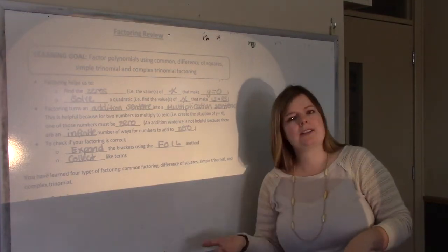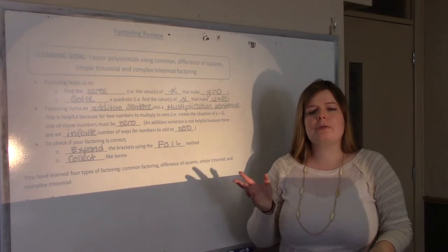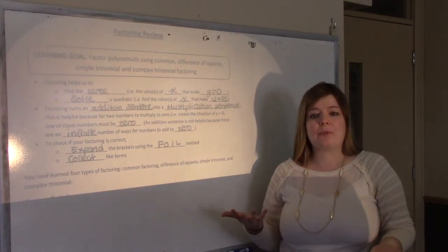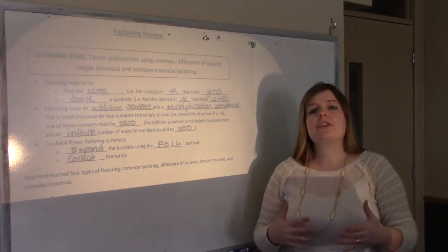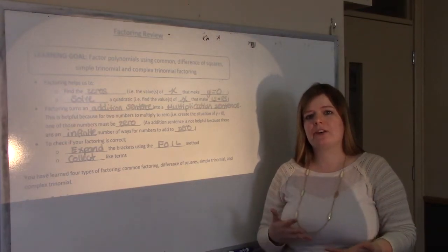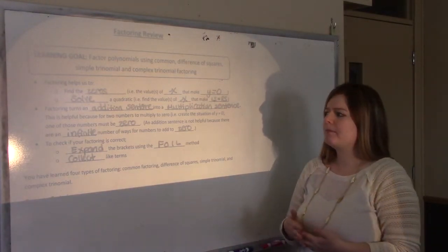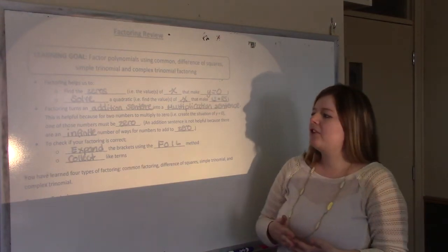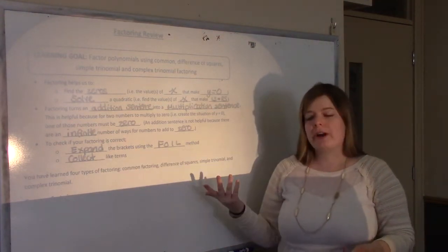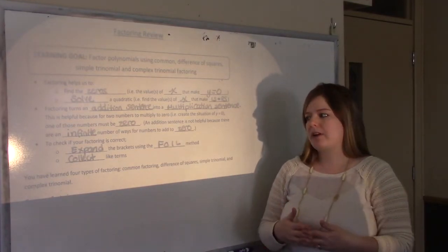Factoring turns an addition sentence into a multiplication sentence. This is useful because when two numbers multiply to zero, one of those numbers has to be zero. When you're adding a bunch of things together, you can have many different ways of making that equal zero — plus five minus five, plus two plus three minus five, there's infinite ways. Whereas when multiplying two numbers together, one of them has to be zero for the product to be zero. To check if your factoring is correct, you just expand using FOIL, collect like terms, and you should get back to what you started with.